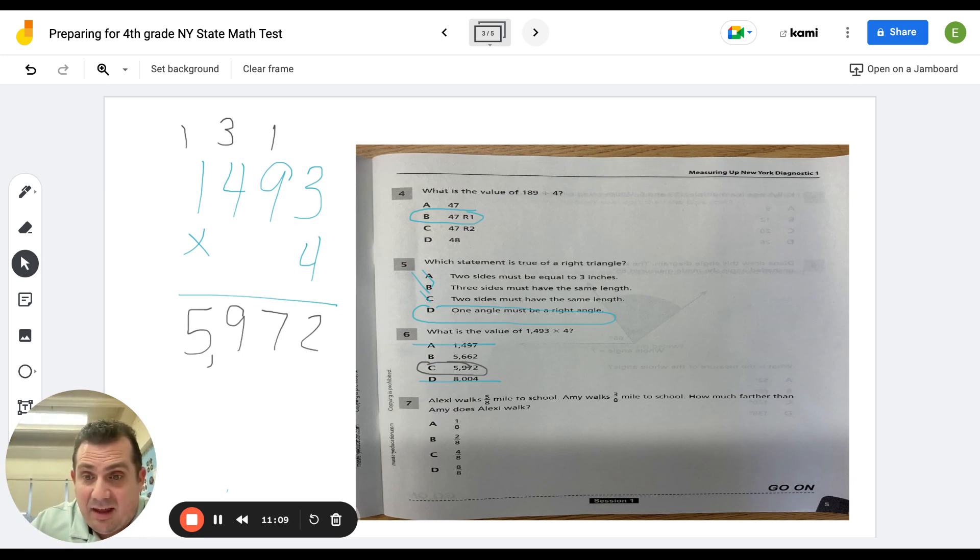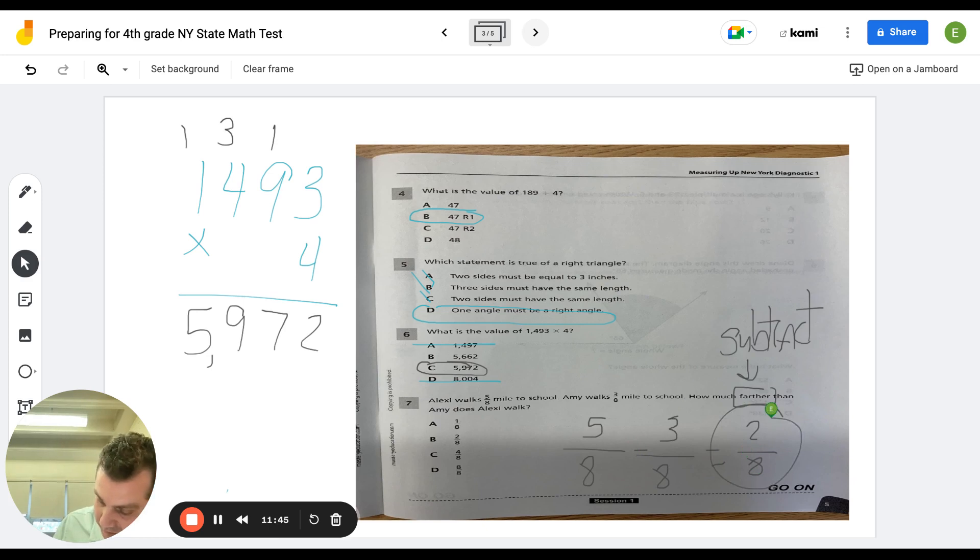And look at seven. Alexi or Alexi walks five-eighths of a mile to school. Amy walks three-eighths of a mile to school. How much farther than Amy does Alexi walk? How much farther than Amy? Well, farther, farther, that is subtract. You're finding the difference between the difference between the two. And five-eighths minus three-eighths equals two-eighths, which is B. That key word, how much farther. It's actually that key phrase lets you know you're comparing the two amounts. You're finding the difference, which means you're subtracting. Awesome.